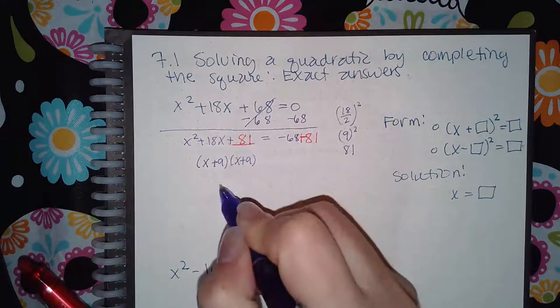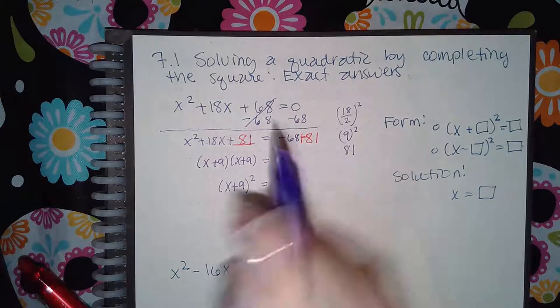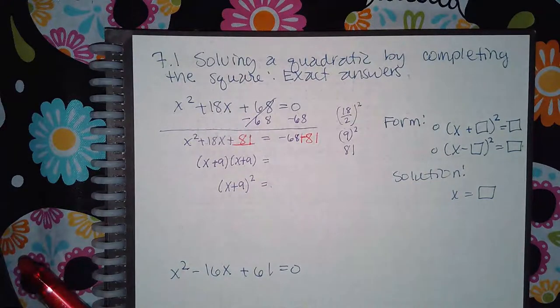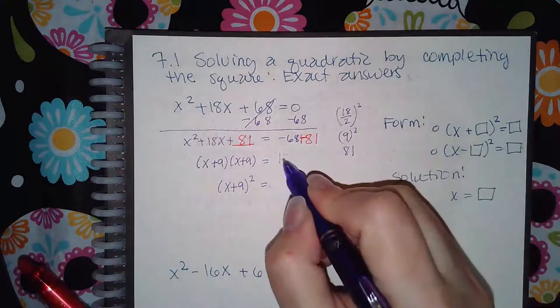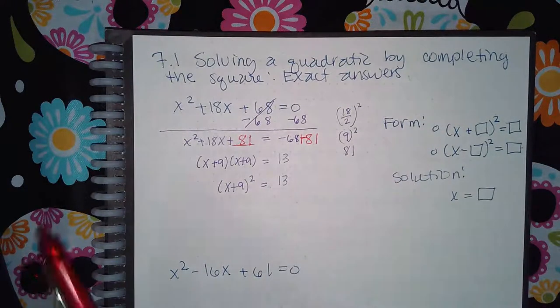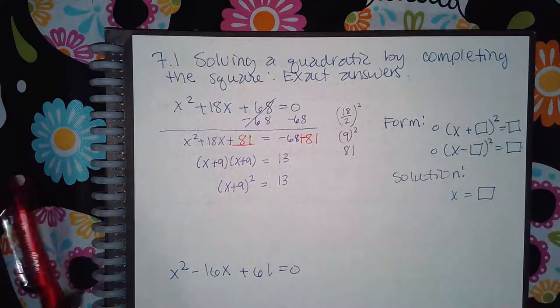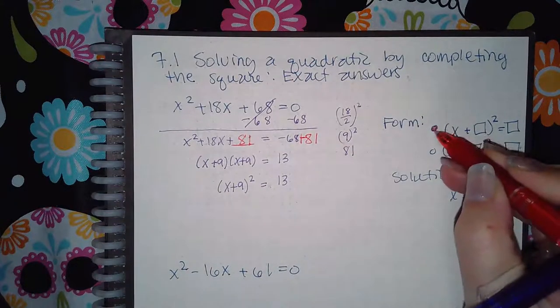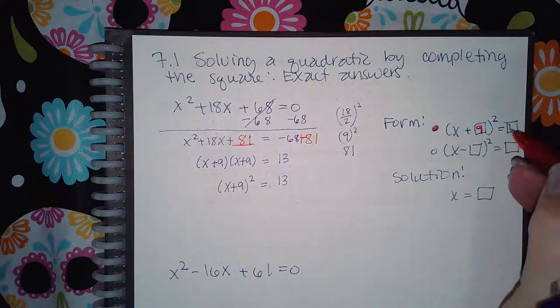So on this side if I factor it, I get X plus 9 and X plus 9, which ultimately can be written as X plus 9 squared. And on the right hand side I get negative 68 plus 81 which is 13. So this is enough information to figure out the form. I would select this form because it has the plus. I know now that a 9 goes in there and a 13 is what I would be left on the right hand side.